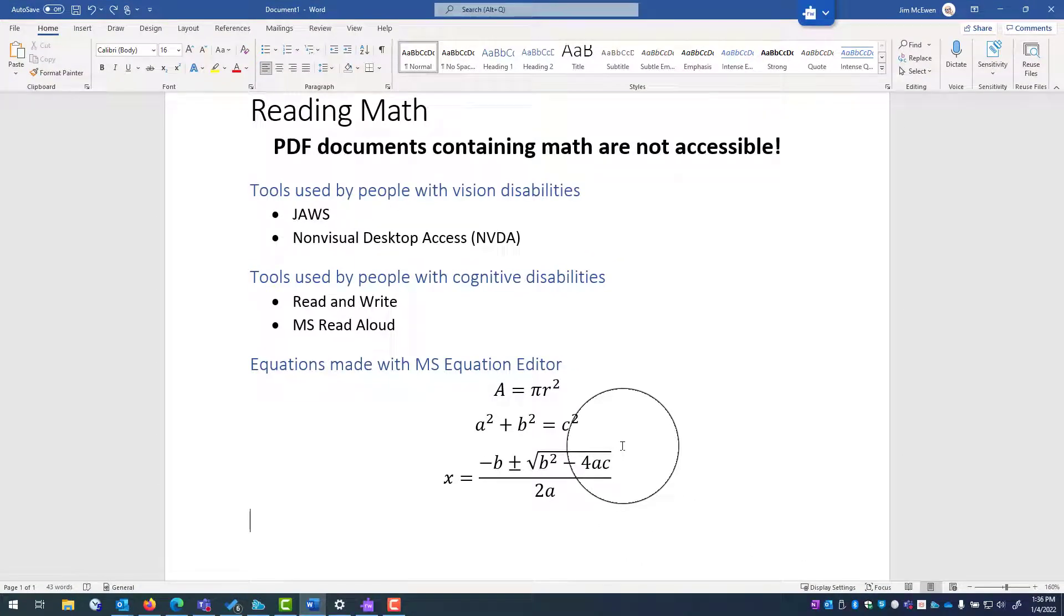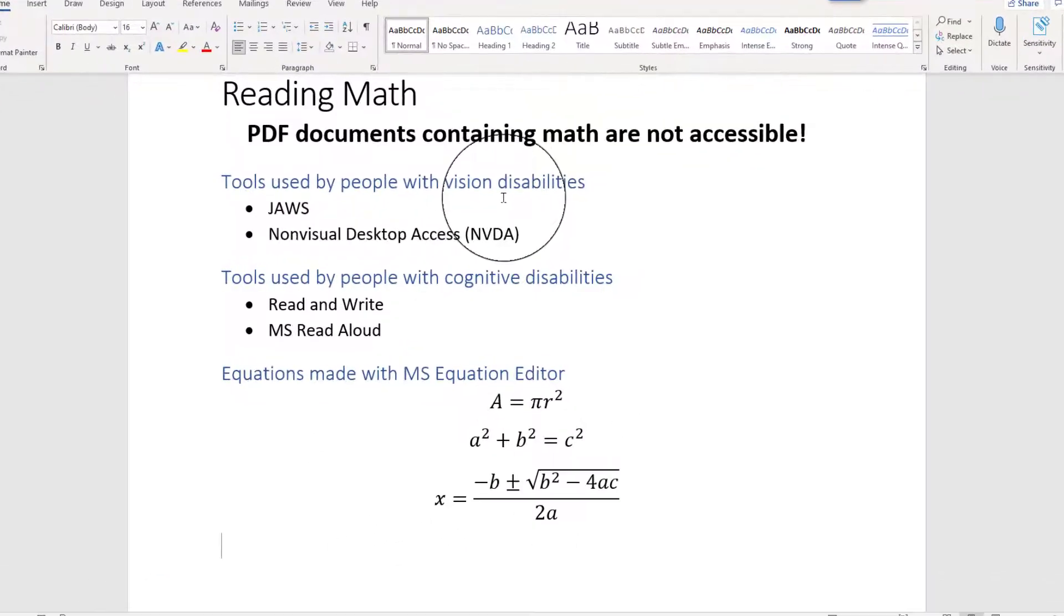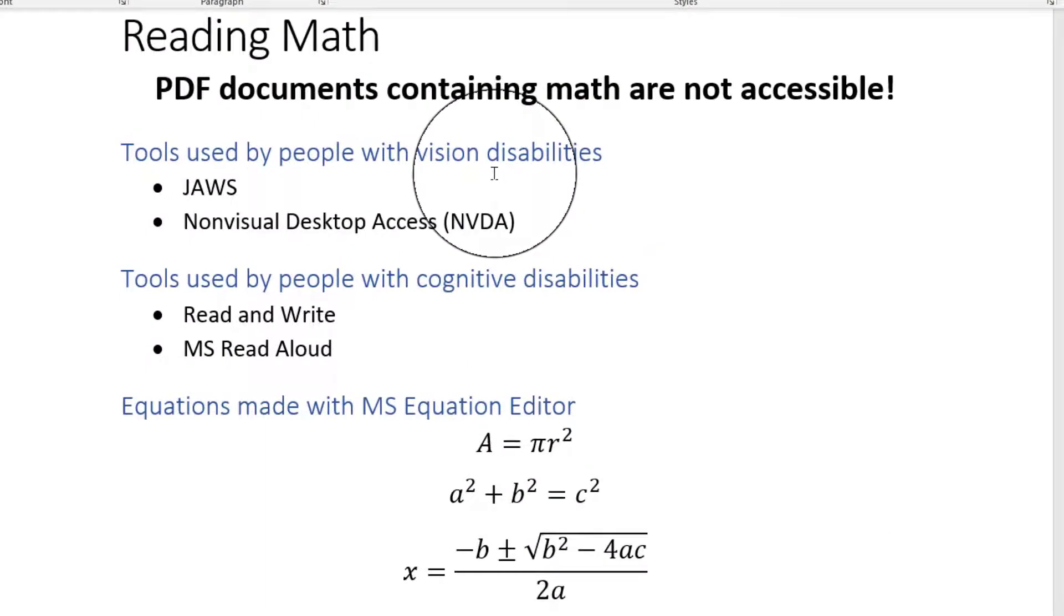Now there are several programs that are used by people who have disabilities when reading electronic documents, and in this case, math. For people who have vision disabilities, most likely students who would be blind or very low vision, they would be using one of these two screen readers. One is called JAWS, and one is called Non-Visual Desktop Access, typically known as NVDA.